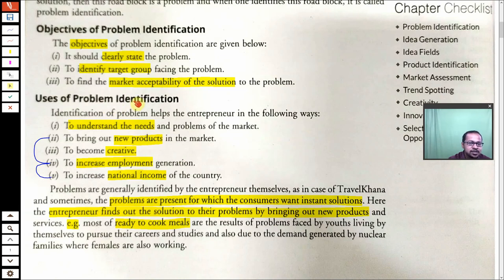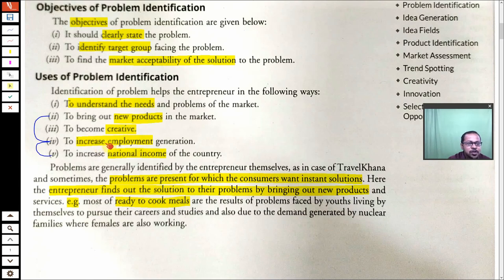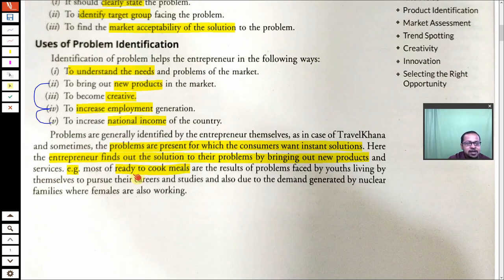The uses of problem identification: if you are able to identify the problem properly and find an acceptable solution, you can understand the needs and problems of the market, and design new products to solve those problems. You can become creative by applying your creative mind to find solutions. You can also increase employment — more products mean more production and more employment, which leads to an increase in national income. These three points are interconnected.